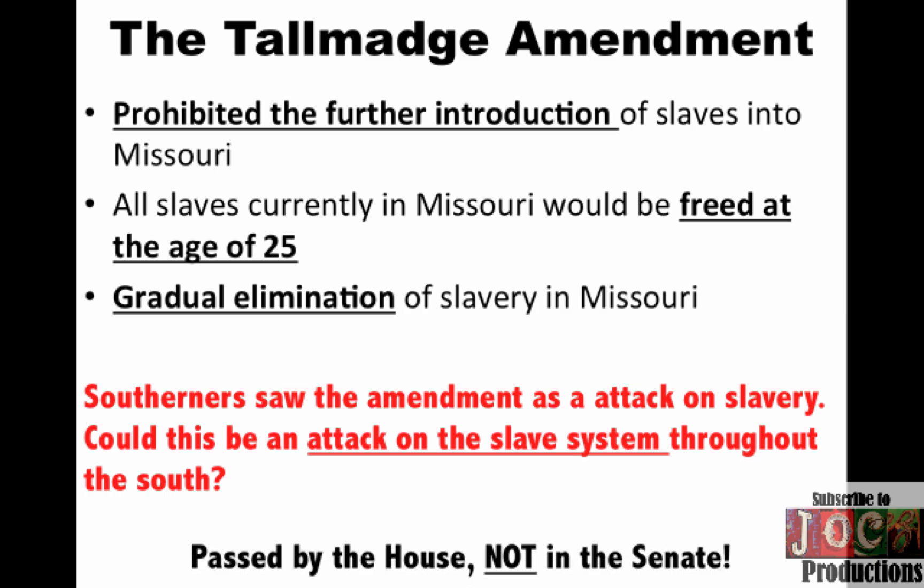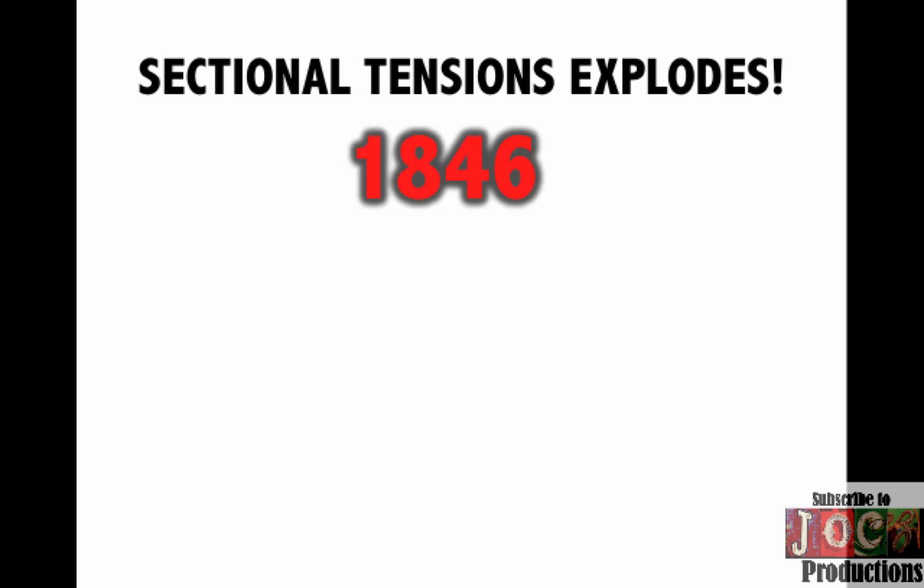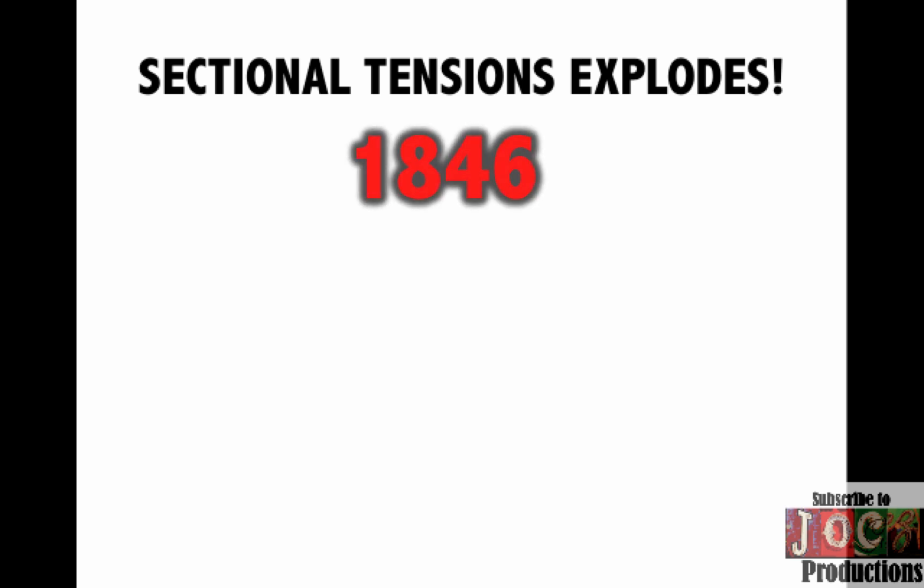What happened? It's rejected. Passed by the House because the Northerners have an advantage there, but not the Senate. So, moving to the topic we're supposed to cover today: in 1846, sectional tensions explode again. It gets hot.